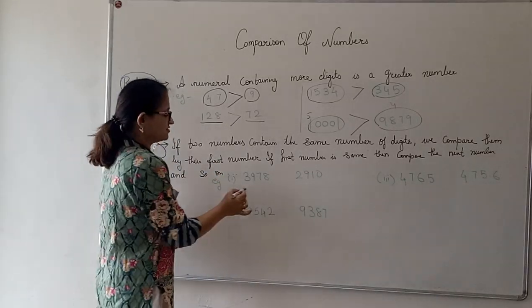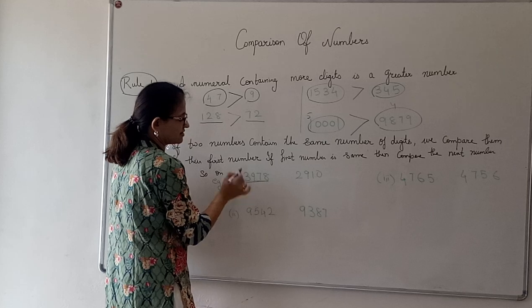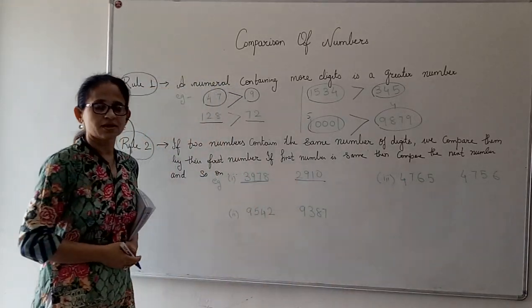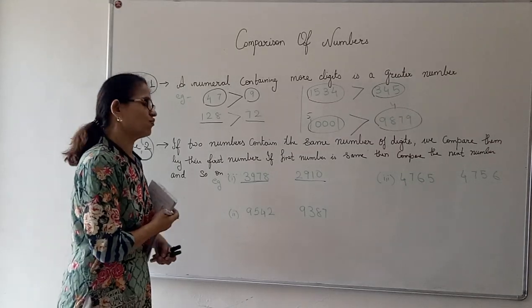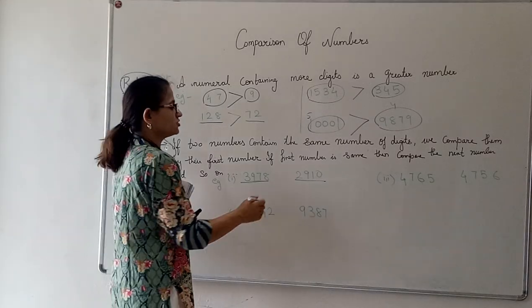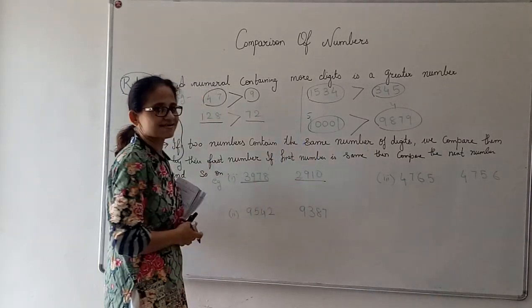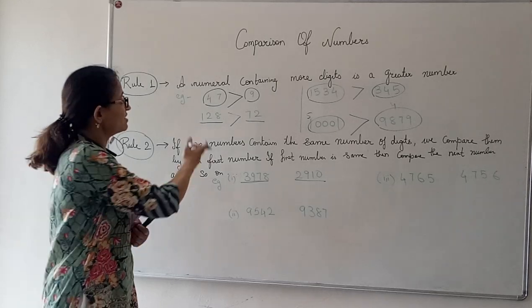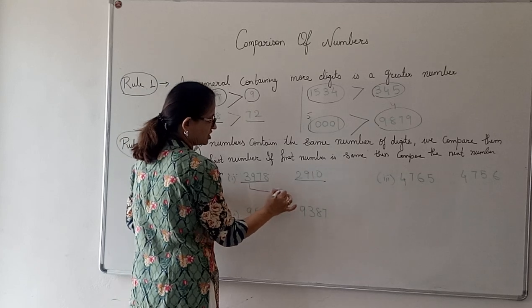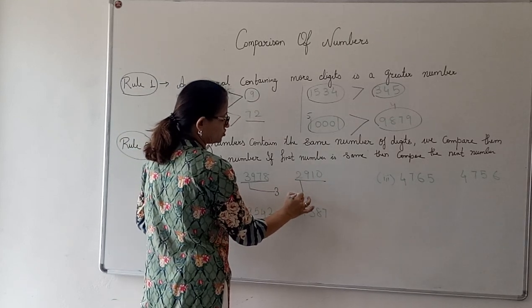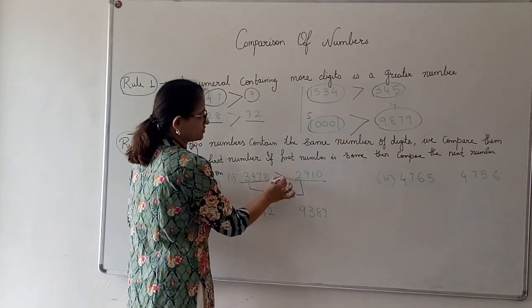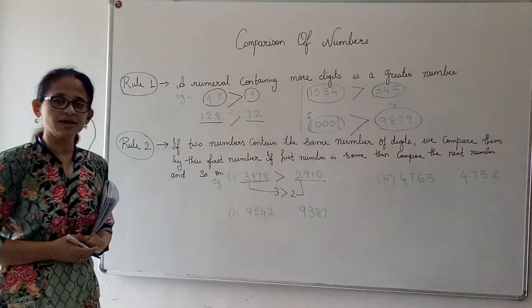For example, 3,978 and 2,910. Both numbers have 4 digits — 3,978 has 4 digits and 2,910 has 4 digits — so we cannot compare with rule number 1. We have to look at the first digit: here it is 3 and here it is 2. Which one is bigger? Of course 3. So 3,978 is bigger.